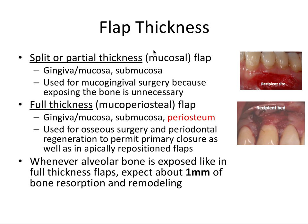Now let's talk about the two different types of flaps in terms of thickness. We have the split or partial thickness flap — also called the mucosal flap — and the full thickness or mucoperiosteal flap. For the mucosal flap, we have the gingiva or mucosa and the submucosa, which includes the epithelium, lamina propria, vessels, and nerves. This type is less aggressive and used for mucogingival surgery where we don't need to expose the bone.